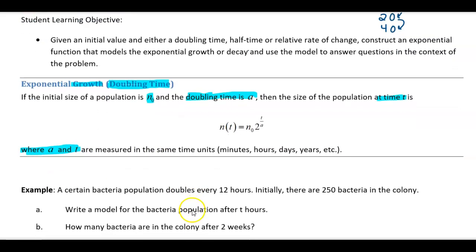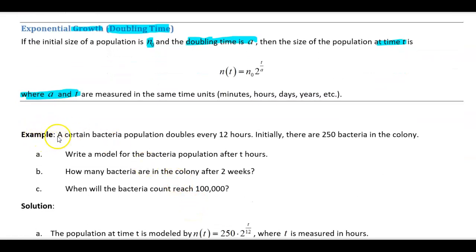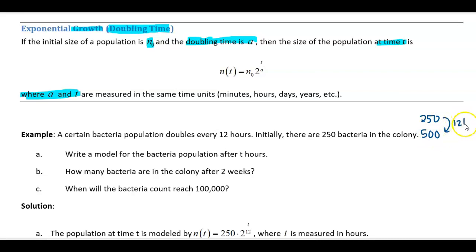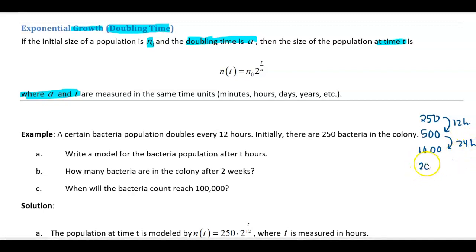Here's an example with bacteria doubling every 12 hours. You start with 250 bacteria, after 12 hours you have 500, after 24 hours you have 1000, and after 36 hours you have 2000. So just so you understand what's happening here.